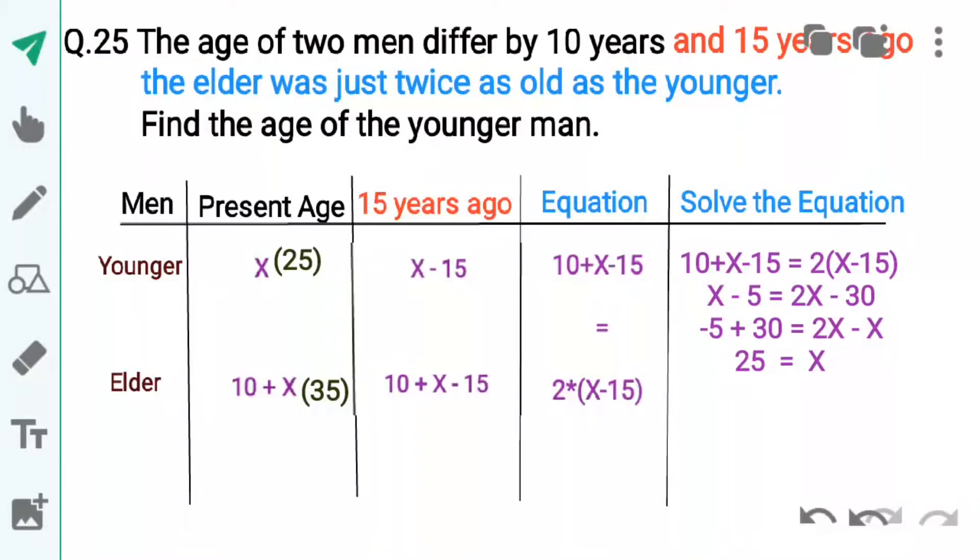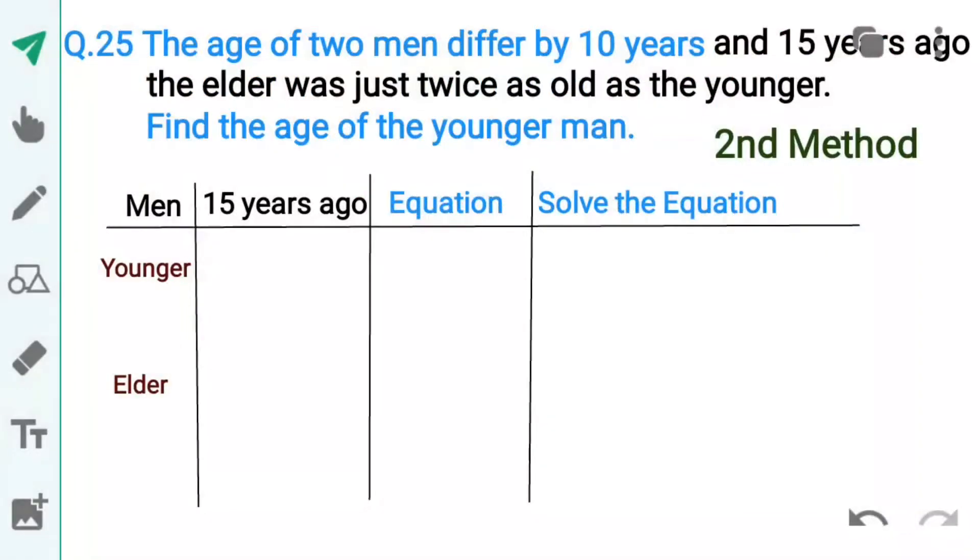Students, ab equation solve karengge. Variable ko variable se aur number ko number se solve karengge. Toh x ki value ayeggi 25 jo younger ki present age hogi. Elder ki age nikalne ke liye 25 mein 10 plus karengge jo 35 hogi.